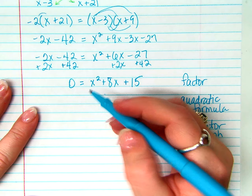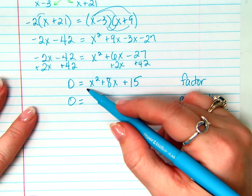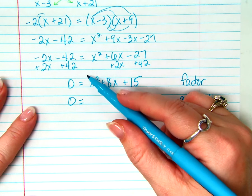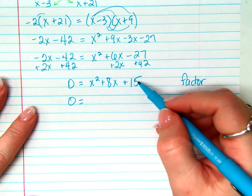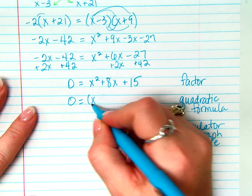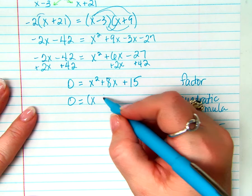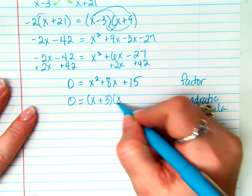So which way do you want to do this? Factoring? Okay. We'll do factoring. So we say, well, this is leading coefficient of 1, so that makes it pretty easy for us, right? Because we say what multiplies to be 15 and adds to be 8. What two numbers multiply to be 15 and add to be 8? 3 and 5. x plus 3, x plus 5.